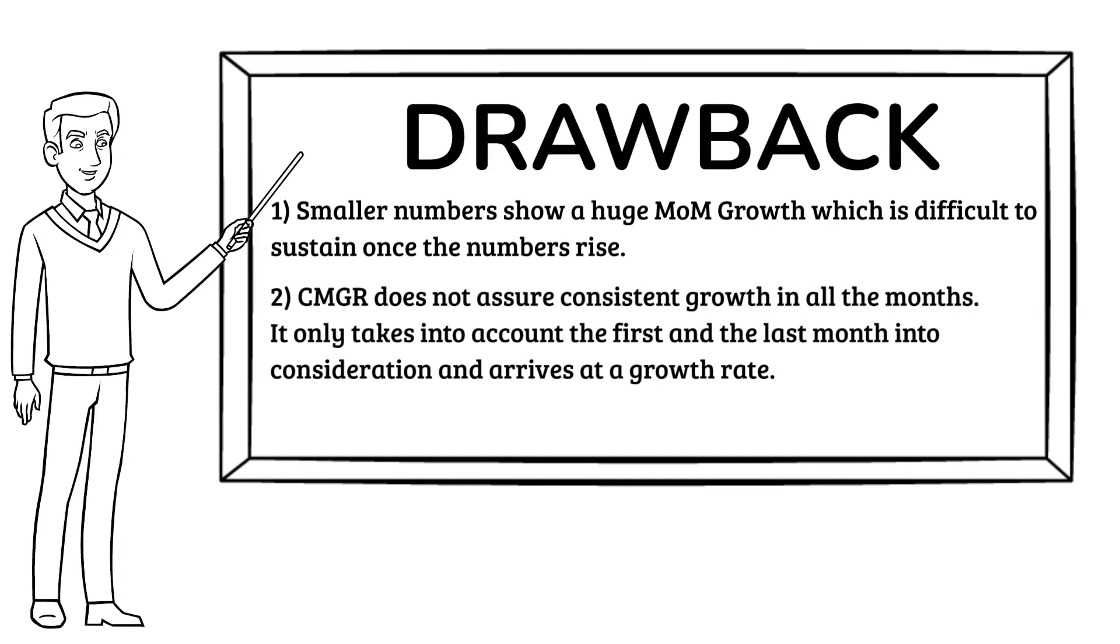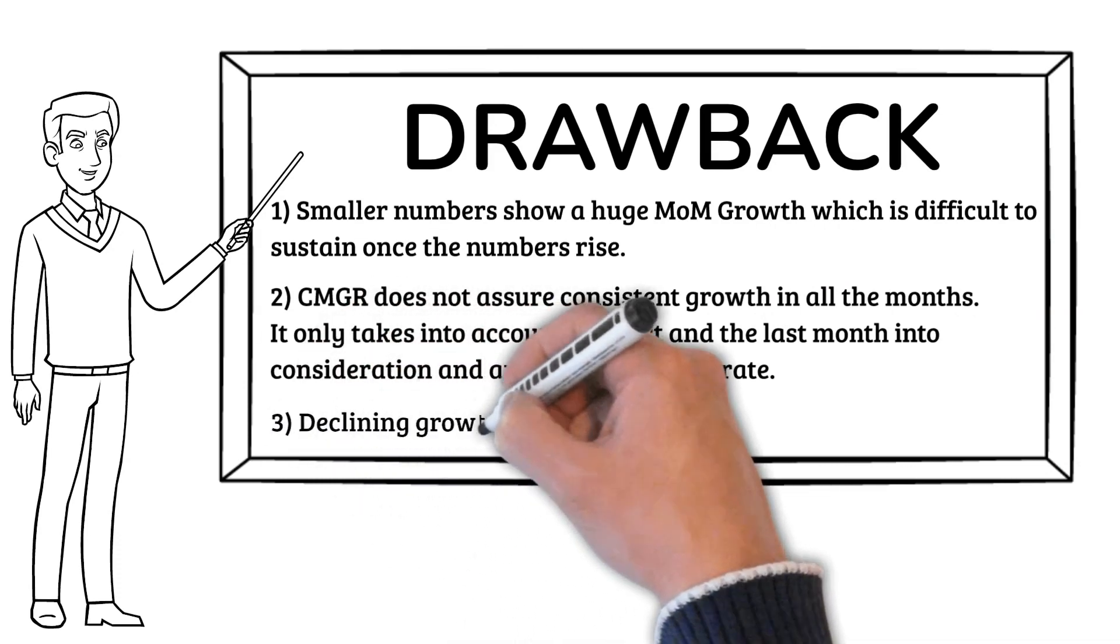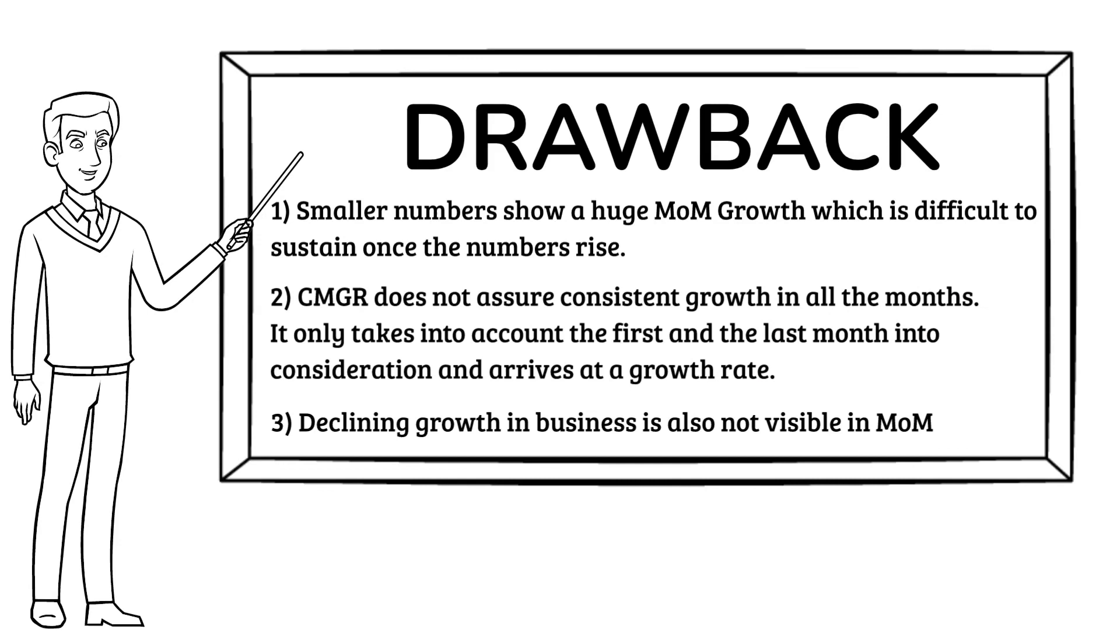Thirdly, for the same reason, even declining growth in business is also not visible in month-over-month. To understand these drawbacks in detail, we suggest reading the article that contains an explanation with examples.